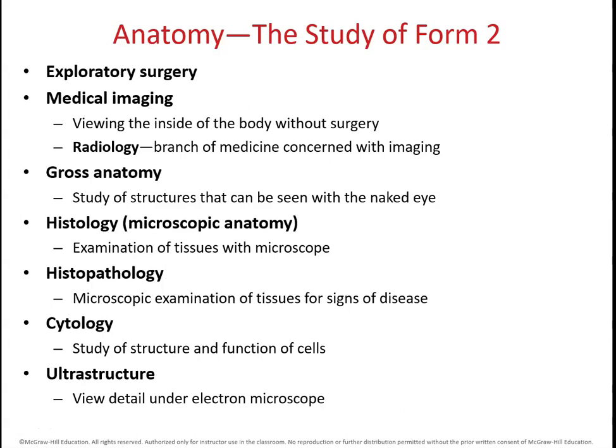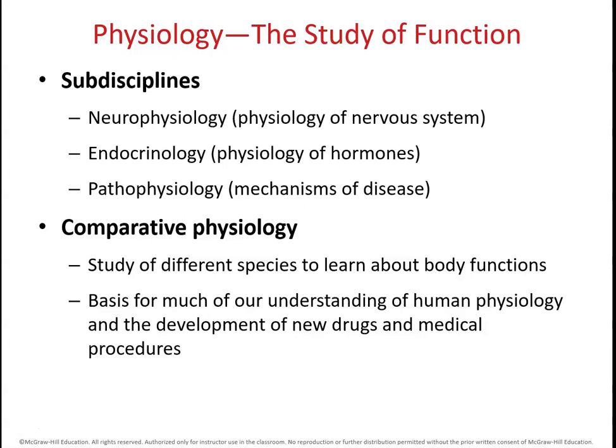One of our goals for this section is to gain an understanding of some of the sub-disciplines of physiology. Three that are especially interesting are neurophysiology, which is the physiology or function of the nervous system; endocrinology, which is the study of the interactions of hormones and how they impact different tissues and organs; and pathophysiology, where we study how different dysfunctions result in disease and symptoms of disease. Comparative physiology looks at body functions across several species, giving us clues about evolutionary conservation and helping us develop new drugs and medical procedures.